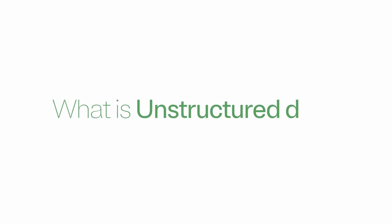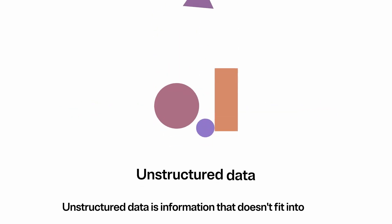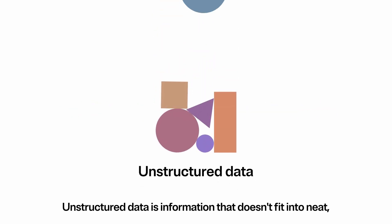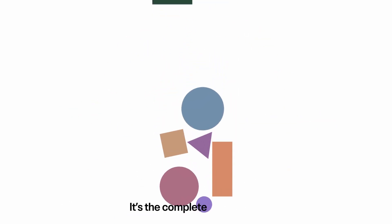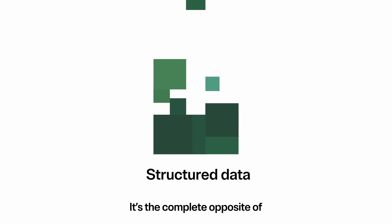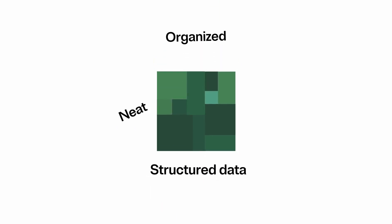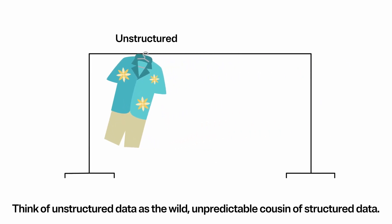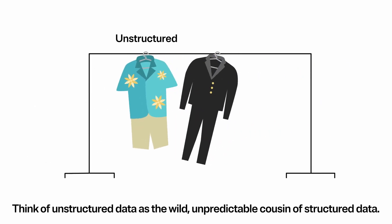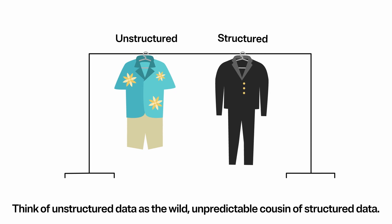What is unstructured data? Unstructured data is information that doesn't fit into neat predefined categories. It's the complete opposite of structured data, which is neat, organized, and easily searchable. Think of unstructured data as the wild, unpredictable cousin of structured data.